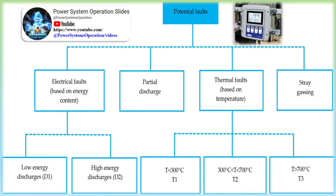Multi-gas monitoring offers advantages over key gas monitoring for critical transformers, transformers subjected to heavy loading, load fluctuation, and transformers that are regularly switched in and out of service. Multi-gas monitoring continuously provides a detailed analysis of a transformer's condition.